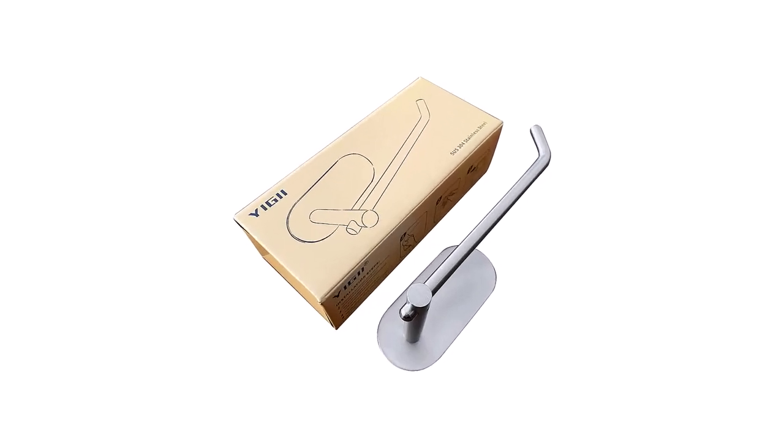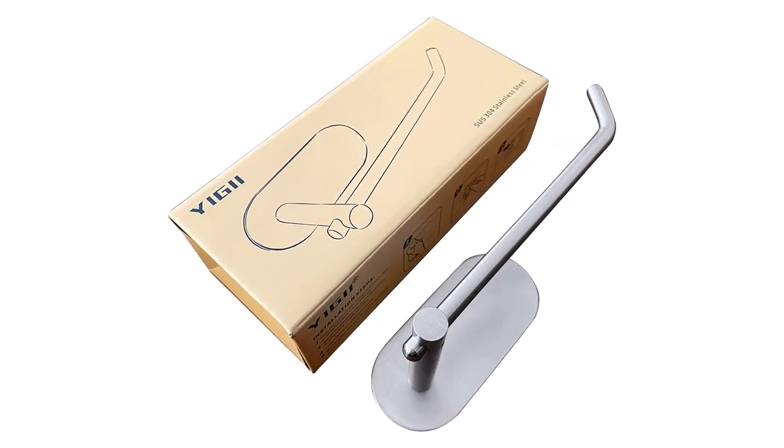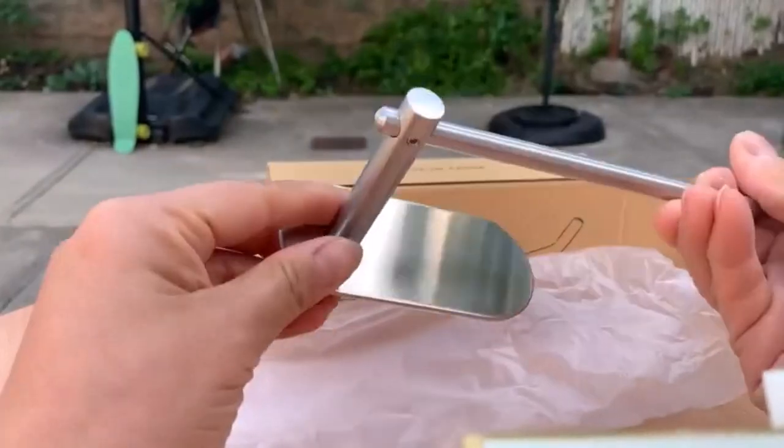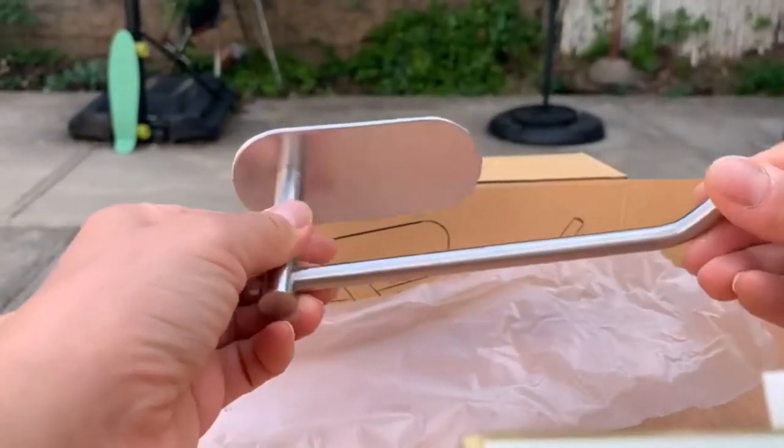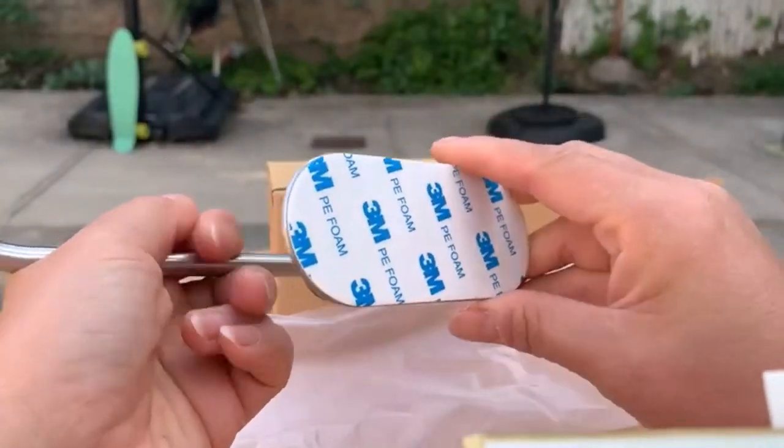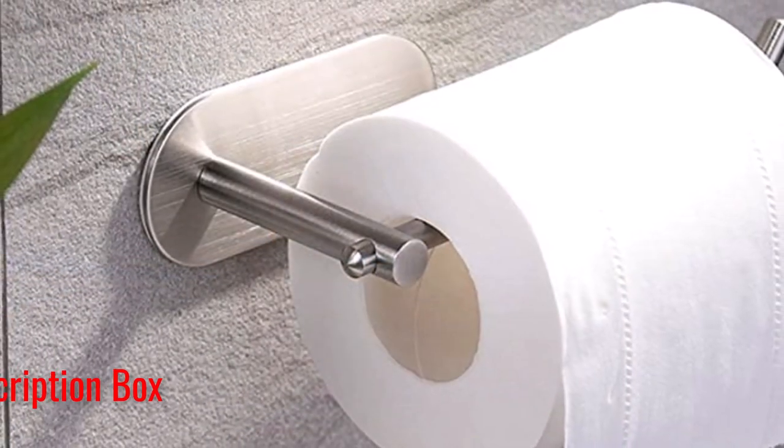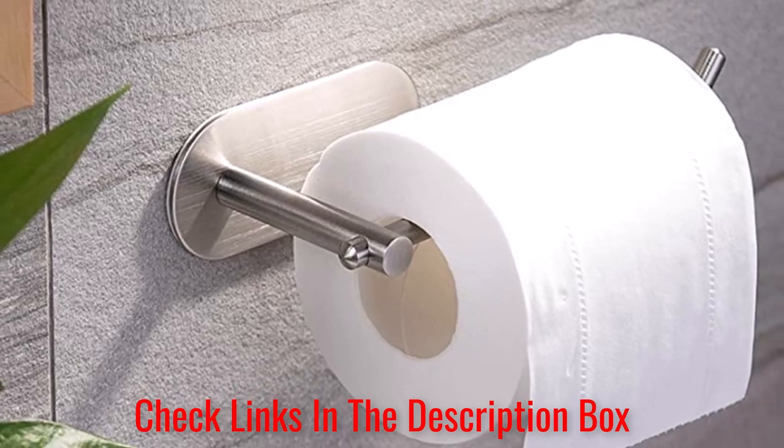Since this is a self-adhesive toilet paper holder, there's no need to drill the walls for installation. This TP holder sticks to any smooth surface, including ceramic, marble, and glass. I adore the brushed finish because it makes this stainless steel holder look elegant in the RV bathroom.